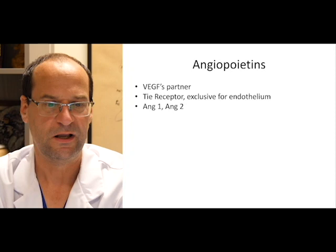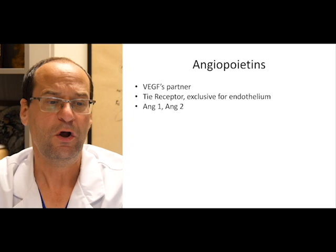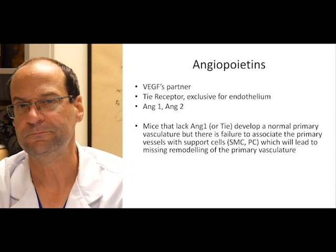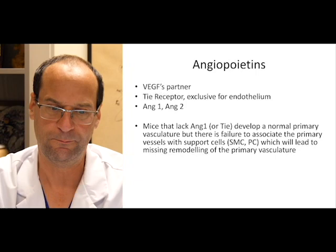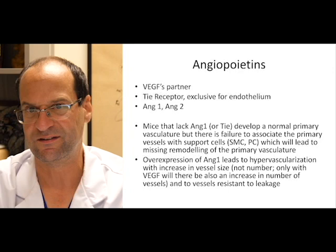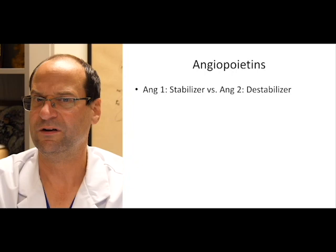In addition to VEGF, which is important for the formation of new vessels, we need angiopoietins, which are important for maturing the blood vessel. Mice that lack angiopoietin — i.e., that only have VEGF — develop a normal primary vasculature because this is VEGF dependent, but there's failure to associate these primary vessels with their supporting cells, which will lead to missing remodeling of the primary vasculature. On the other hand, if you have an overexpression of angiopoietins, you will have hypervascularization with an increase in vessel size but not in vessel number, and those vessels are also resistant to leakage. There are two different types of angiopoietins: angiopoietin 1 is the stabilizer, angiopoietin 2 is the destabilizer.